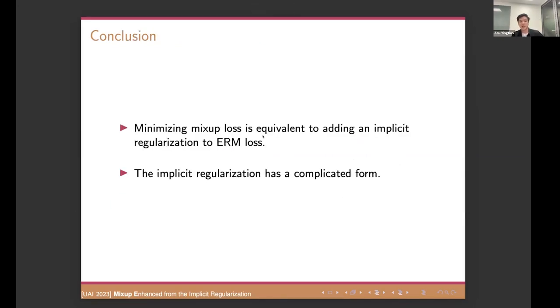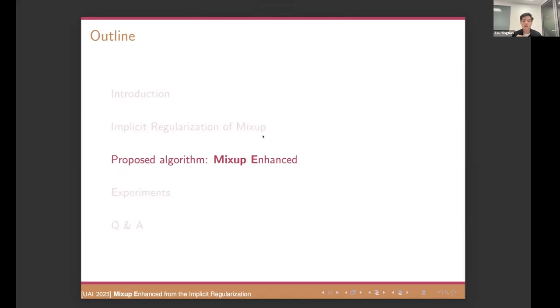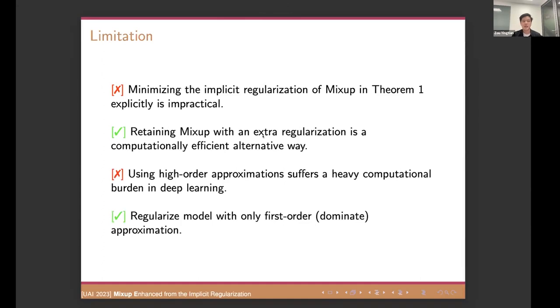So any questions? Okay. So which means in the linear model, we will have the same implicit bias on the gradient descent or training with the mixup. That's the same. Okay. So in a nutshell, we have two conclusions. The first is obvious minimizing mixup loss is equivalent to adding an implicit regularization to your ERM loss. And second one is the implicit regularization has a very complicated form, right? Okay. So to adjust above concerns, we proposed an algorithm called mixup enhanced, we use the MixupE for short. This is an efficient improvement of mixup, transcending the implicit bias of mixup.